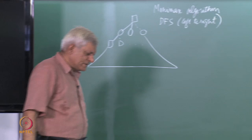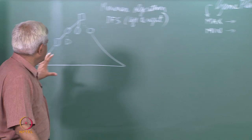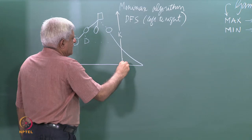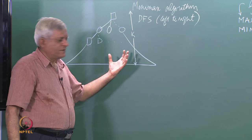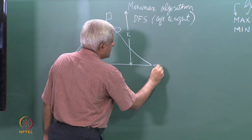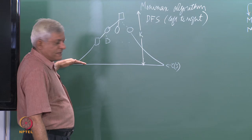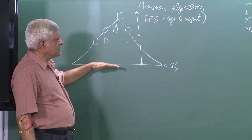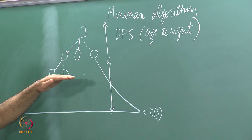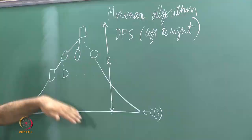Today we want to look at an improvement upon minimax which does not inspect the entire tree up to k ply. Minimax goes all the way down to the leaf level, applies the evaluation function e(j), and backs up the values using the minimax rule. At alternate levels we choose the minimum, then maximum, then minimum and so on — that is why it is called the minimax algorithm.